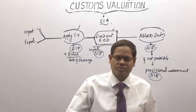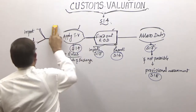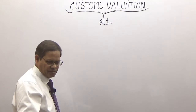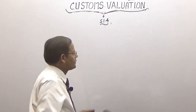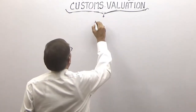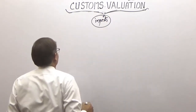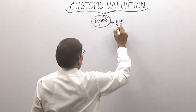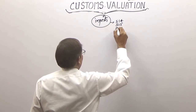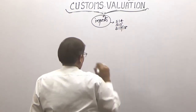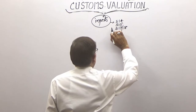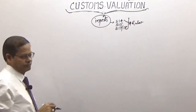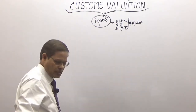Imports are more important, so let us see the imports valuation mechanism in detail. For imports: Section 14 for valuation, Section 15 for the relevant date of rate of duty, and Section 17 or 18 for assessment. Section 16 is for exports. Valuation rules are also very important, particularly for imports.